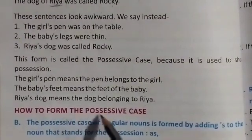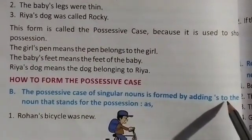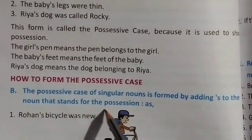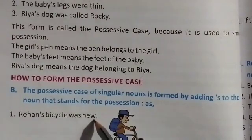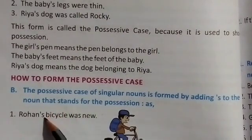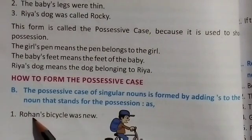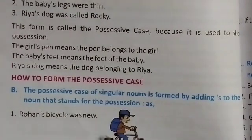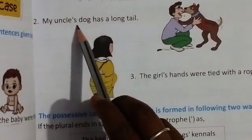How to form the possessive case: the possessive case of singular nouns is formed by adding apostrophe 's' to the noun. For example, Rohan's bicycle was new — kiski bicycle new hai? Rohan's ki. Hum kya add karte hain? Apostrophe 's' — 's' ke pehle apostrophe lagate hain. Rohan's means Rohan ki.